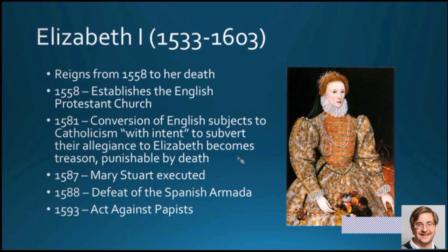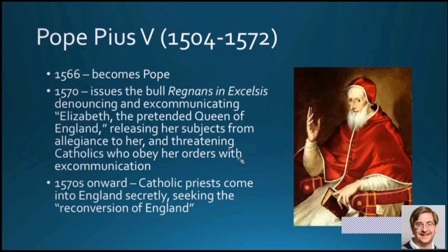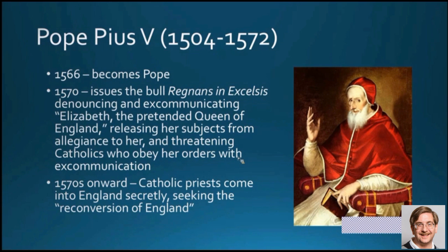All of that seems exceedingly harsh, but there was a reason for it, and that reason has to do with Pope Pius V. Pope Pius became Pope in 1566, and in 1570 he issued a bull — Regnans in Excelsis — denouncing and excommunicating Elizabeth, the pretended Queen of England, releasing her subjects from allegiance to her, and threatening Catholics who obeyed her with excommunication themselves. This was suicidal from the standpoint of Catholicism. Catholics became automatically suspect of terrorism, and from the 1570s onward, Catholic priests came secretly to England seeking to reconvert it to Roman Catholicism.